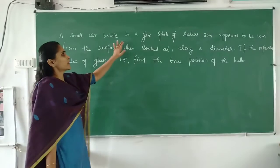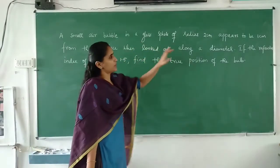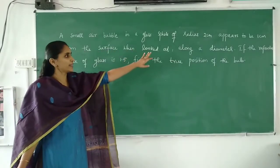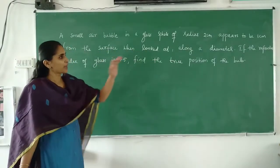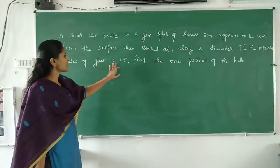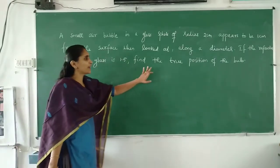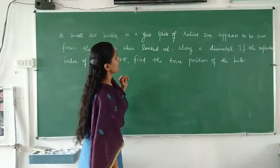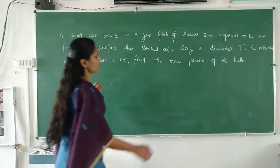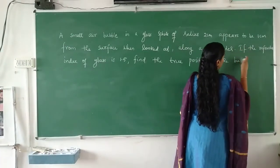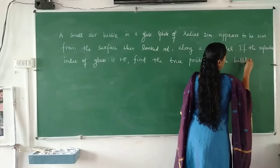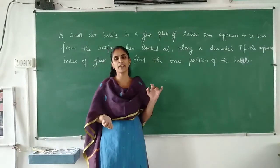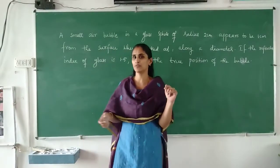Next problem: a small air bubble in a glass sphere of radius 2 cm appears to be 1 cm from the surface when viewed along the diameter. If the refractive index of glass is 1.5, find the true position of the bubble.